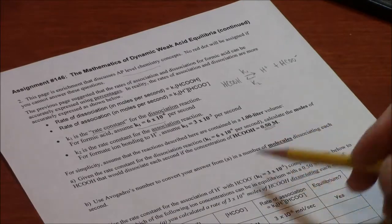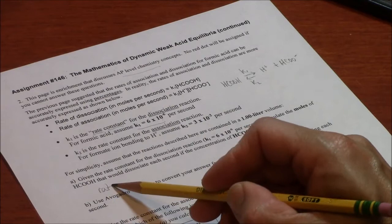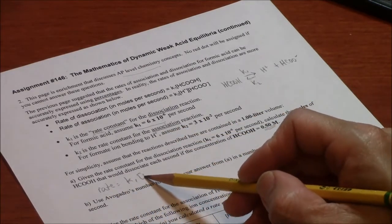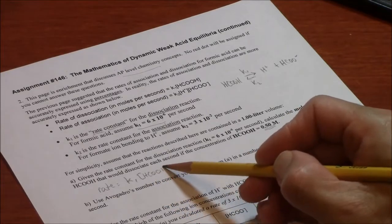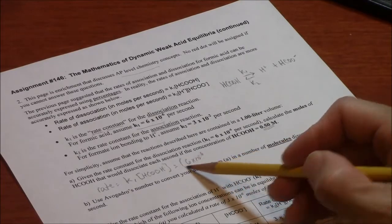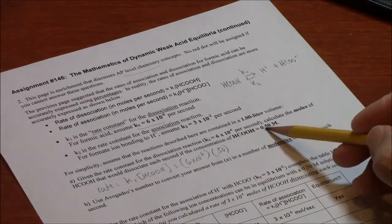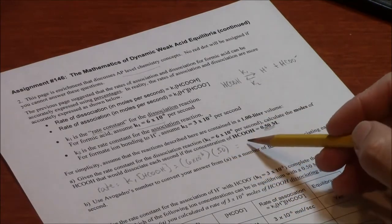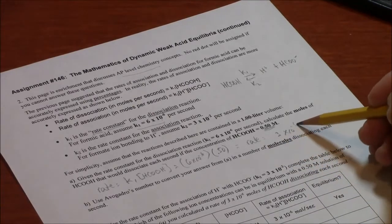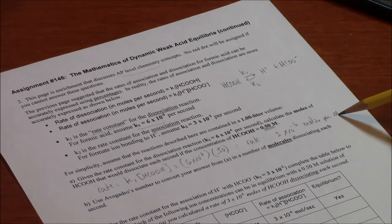If the molarity is 0.5 molar, then this is actually quite easy. Rate equals K1 times the molarity of HCOOH, which in this case is 6 times 10 to the minus 6 times 0.50 molar. And so the rate is 3 times 10 to the minus 6 mols per second.